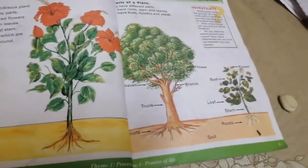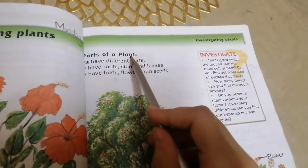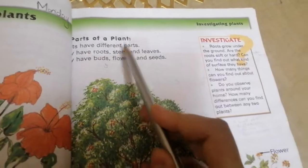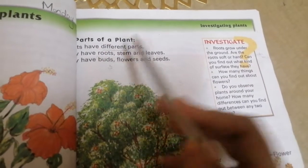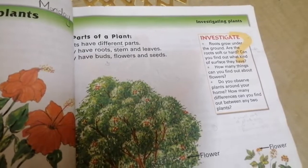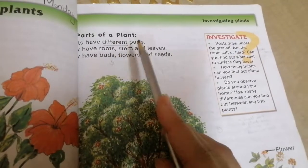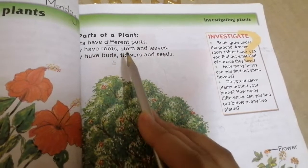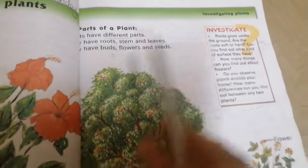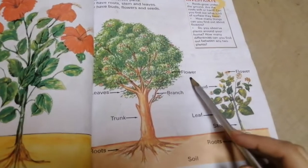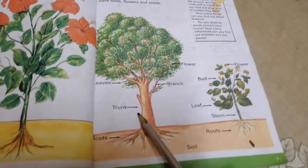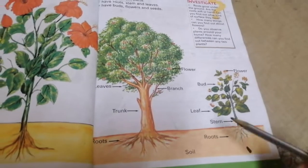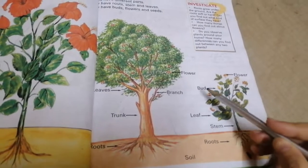Now come to page number seven. Parts of a plant. Plants have different parts. Underline different. They have roots, stem and leaves. They have buds, flowers and seeds. Flowers, branch, leaves, trunk, roots, soil, roots, stem, leaf, buds, flower.